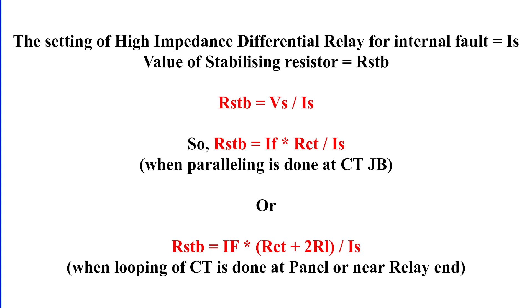Expanding it further, we get RSTB equals IF multiplied by RCT divided by IS when paralleling is done at CT junction box. Or RSTB equals IF multiplied by the sum of RCT and two times RL divided by IS when paralleling is done at the panel. This ensures that even under the worst case scenario of CT saturation, the current through the relay coil remains below the setting value, preventing false trips.